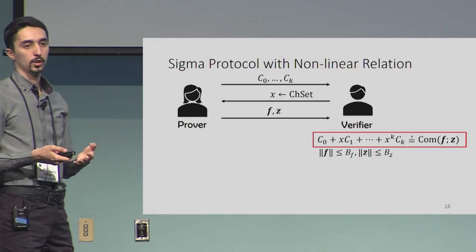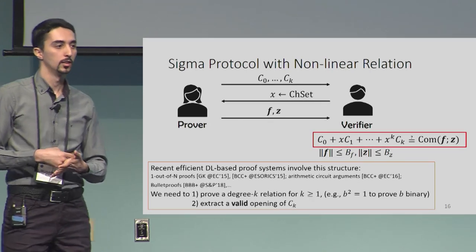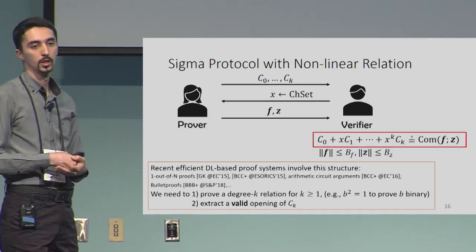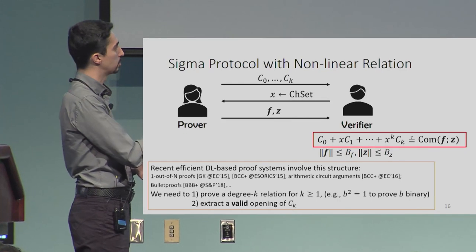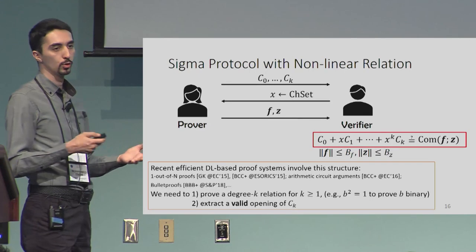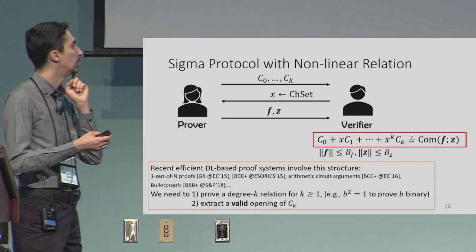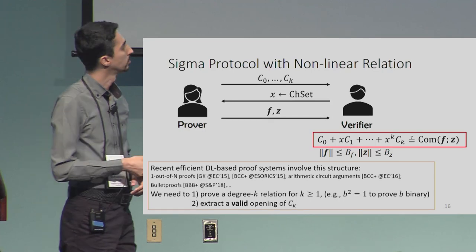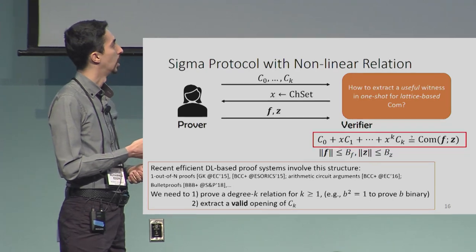Why do we care about this structure? In the discrete-logarithm setting, advanced protocols — most notably Bulletproofs — involve degree-K relations in this overall structure. There is no solution in the lattice setting yet, and we are providing one. We need to prove a degree-K relation and also extract a valid opening of commitment CK for a homomorphic lattice-based commitment scheme, and we want to do this in one shot.